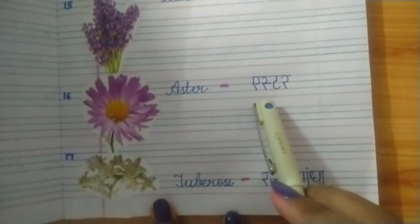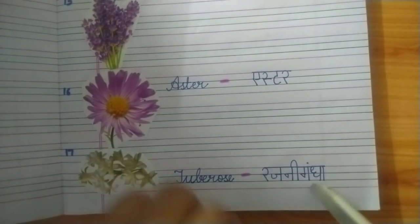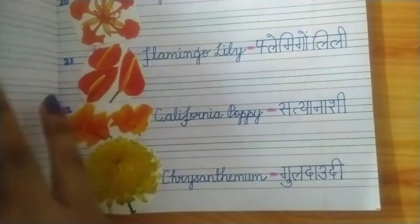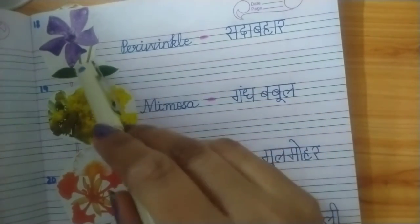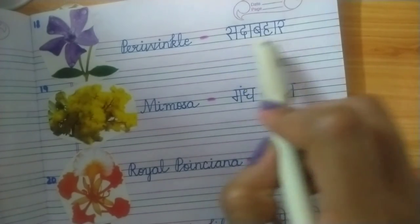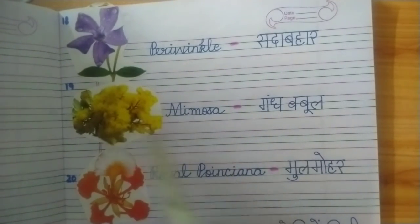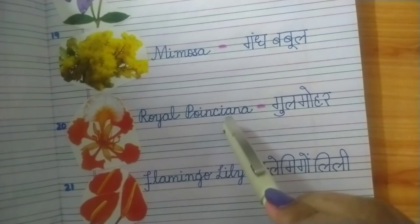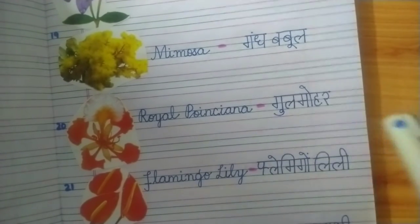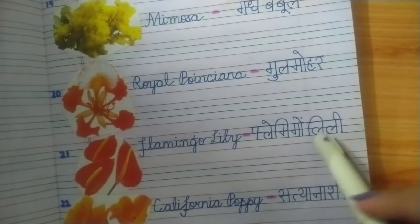Aster, aster. Tuberose — in Hindi we call it rajnigandha. See the next one. Periwinkle, sadabahar. Mimosa, gandh babul. Royal Poinciana, gulmohar. Flamingo lily, flamingo lily.